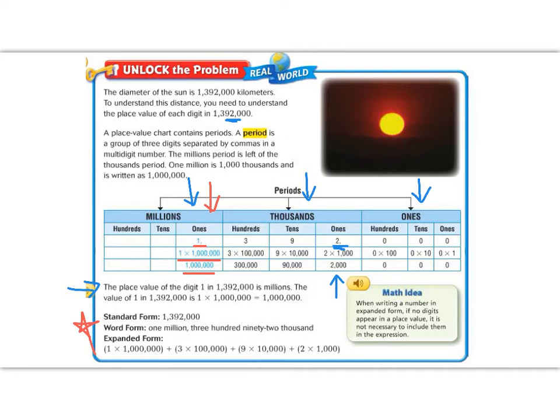Standard form is the normal way that we see numbers, like this. Word form is that same number but written out in words. So 1 million, 392,000, and we would have a comma here if the number continued on.